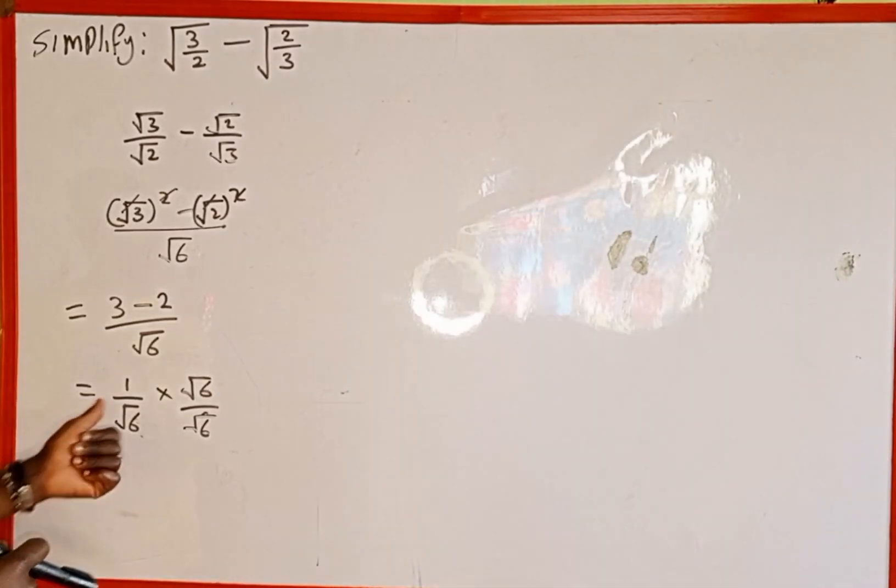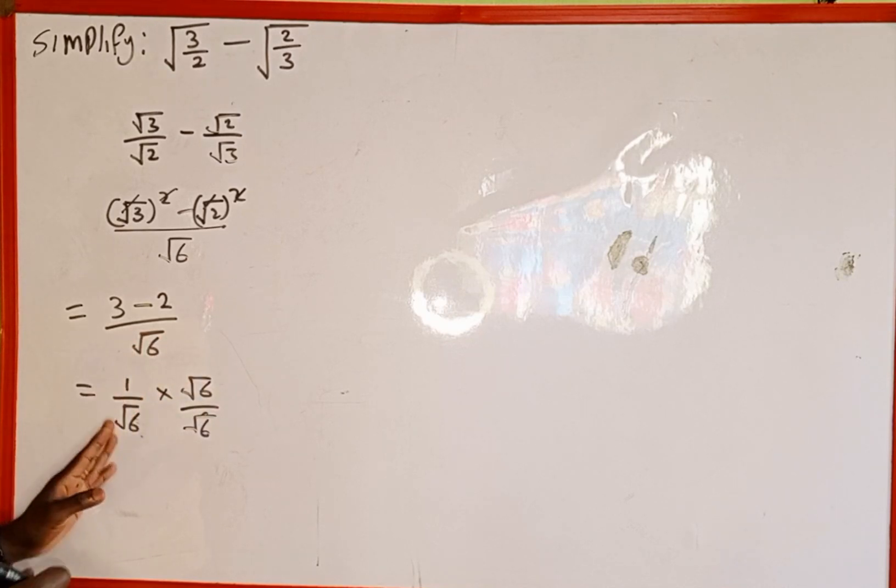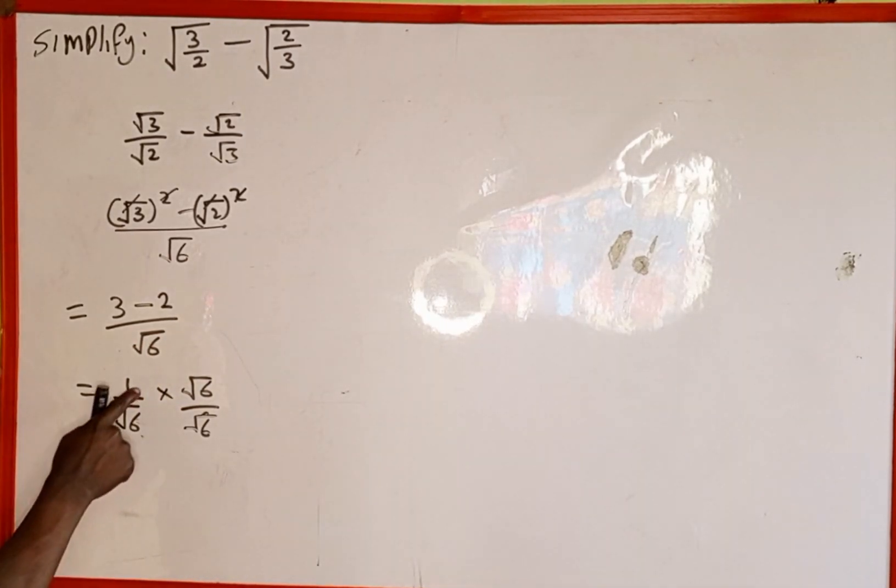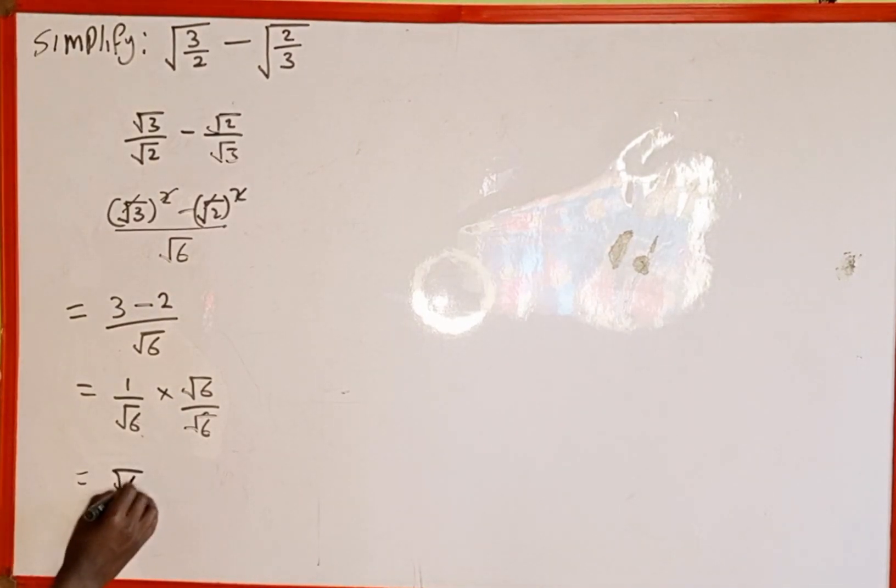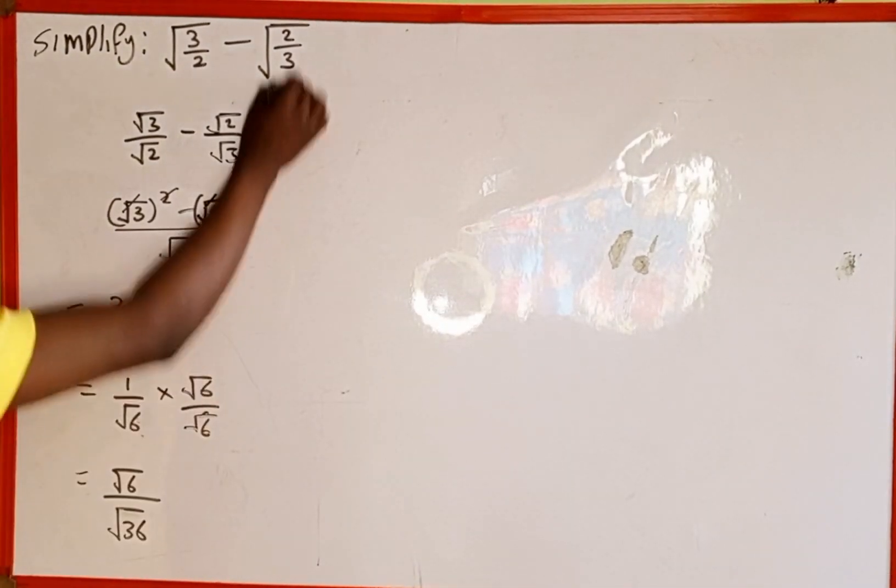This is multiplication of fraction. We can multiply the numerator, then multiply the denominator. This is going to be the same as 1 multiplied by √6 is going to give us √6 divided by √6 multiplied by √6 is going to give us √36.